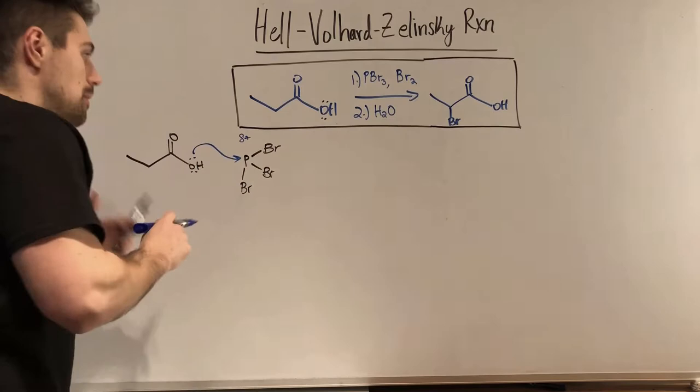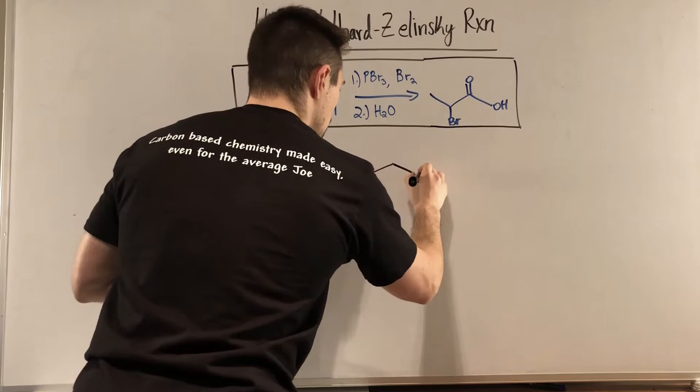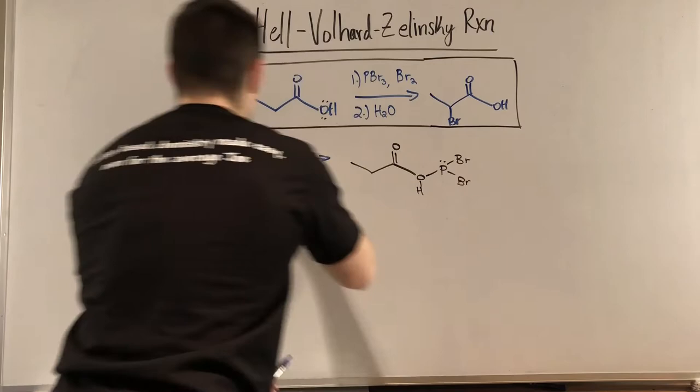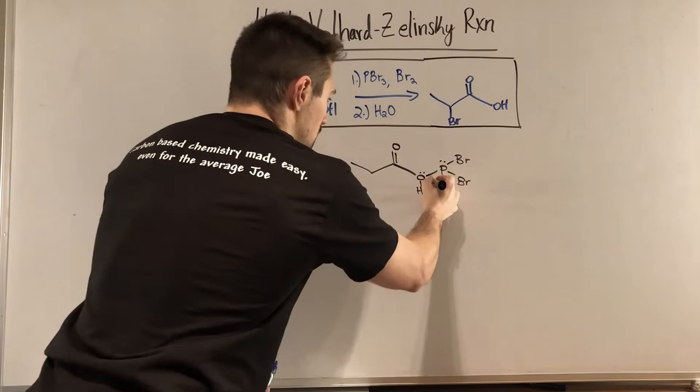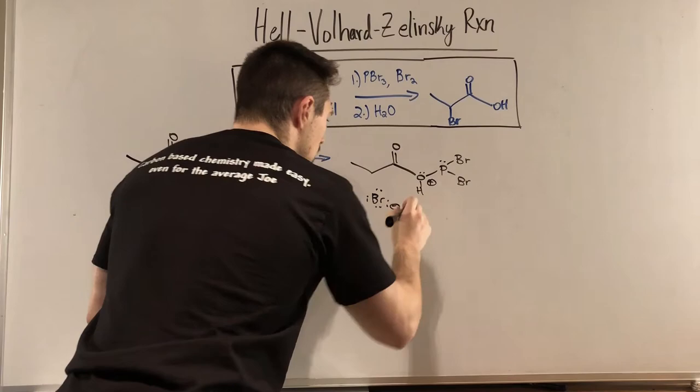And what we will also do in that same process is boot a bromine off. So draw the result. So I didn't touch the carbonyl oxygen right there. So I do have a new bond to that oxygen. The phosphorus, those three bonds, it itself, formal charge stays the same, but we do have a plus charge on the oxygen. That will come into play very soon. So the bromine we booted, this lonely little bromine, that bromine will come back.